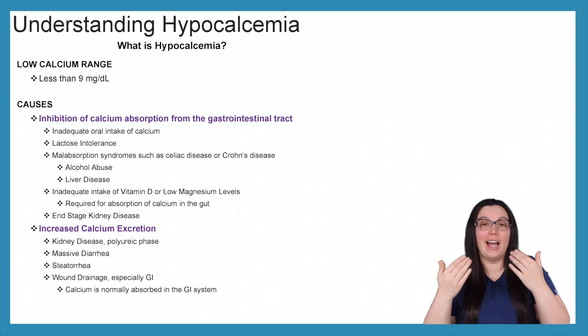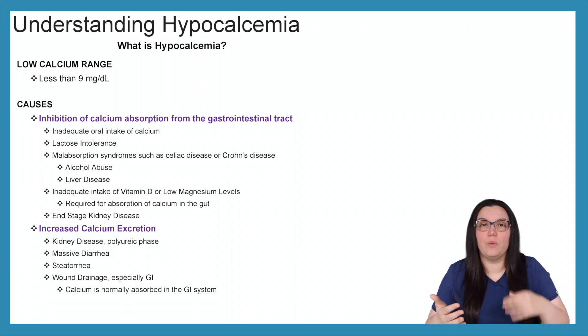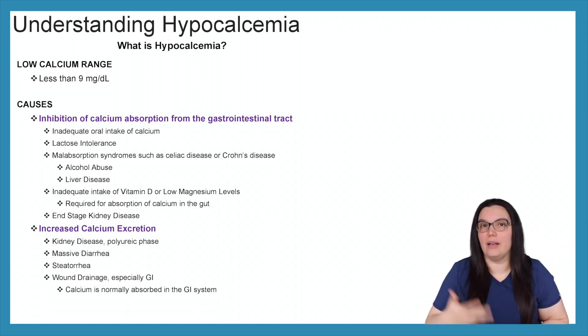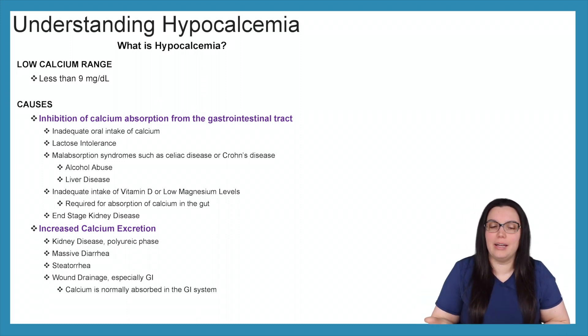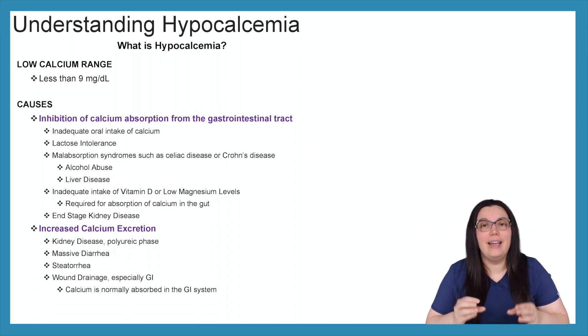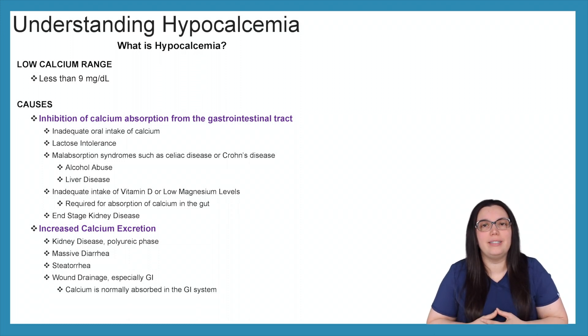So what is hypocalcemia? Hypo means low, calcemia means calcium in the blood. So we're going to have a low calcium range — less than 9 milligrams per deciliter.